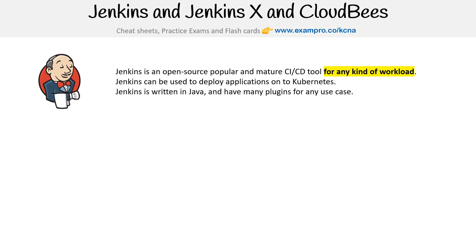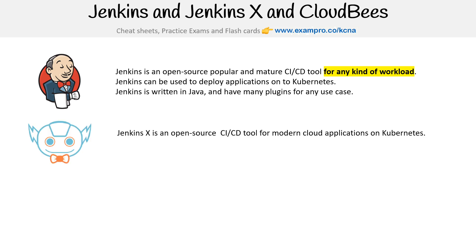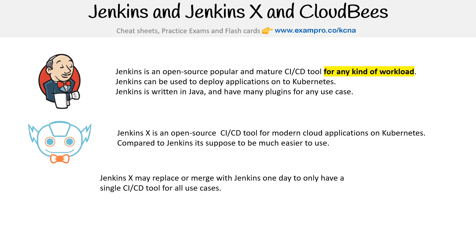So why is there something called Jenkins X? Jenkins X is an open source CI/CD tool for modern cloud applications on Kubernetes. Compared to Jenkins, it's supposed to be much easier to use. Jenkins X may replace or merge with Jenkins one day to have a single CI/CD tool for all use cases. But for now, you have two options: Jenkins and Jenkins X.